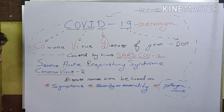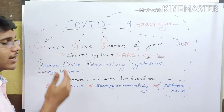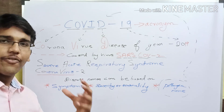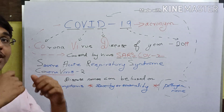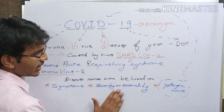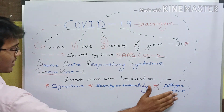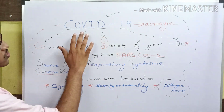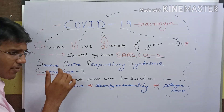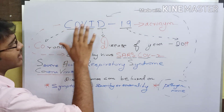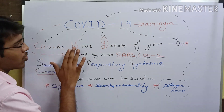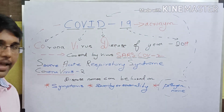We already said that disease names should not be based on a person's name, place, food, etc. Then what should they be based on? Here is the answer: disease names can be based on symptoms of the disease, severity, seasonality of the disease, or pathogen name. Here, COVID-19 is named based on the pathogen name — coronavirus is the pathogen which causes COVID-19 — so it is named Coronavirus Disease of the year 2019. Thank you.